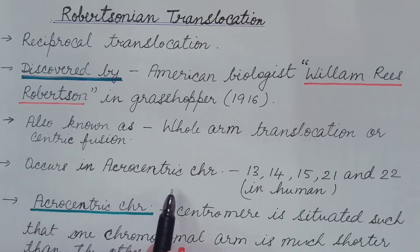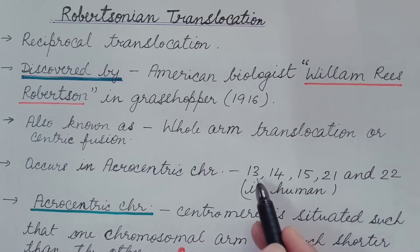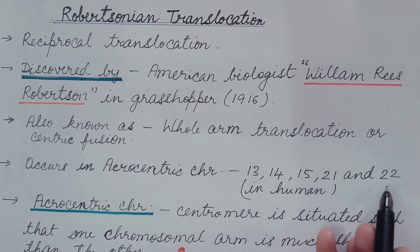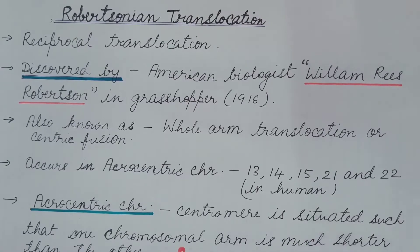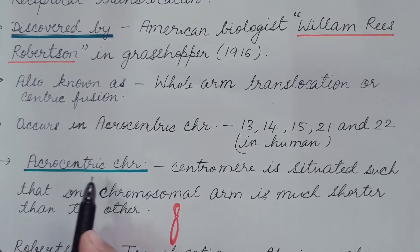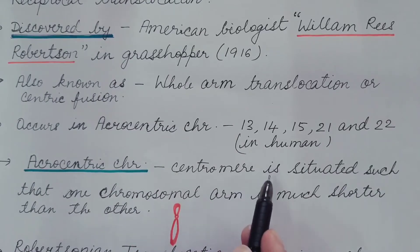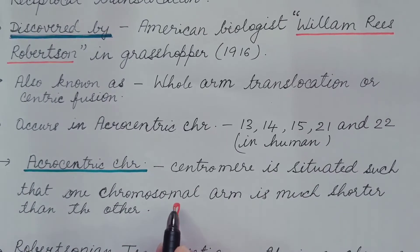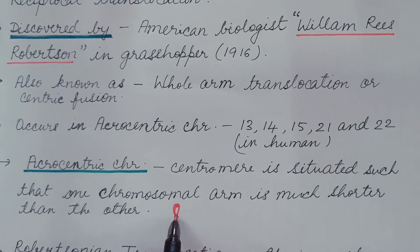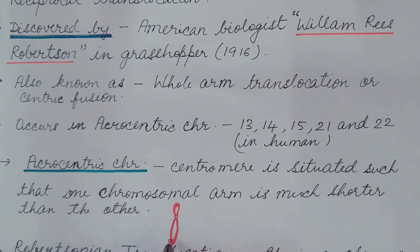Robertsonian translocation occurs in acrocentric chromosomes. In humans, chromosomes number 13, 14, 15, 21, and 22 are acrocentric chromosomes. Acrocentric chromosomes have the centromere situated such that one chromosomal arm is much shorter than the other arm. The centromere is situated near one end, so one arm is very short and the other is long.